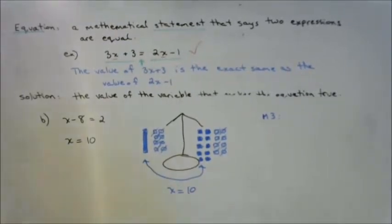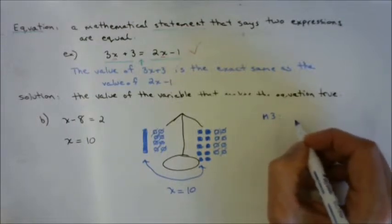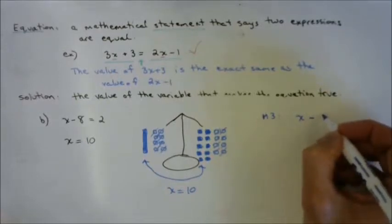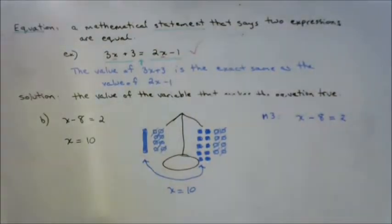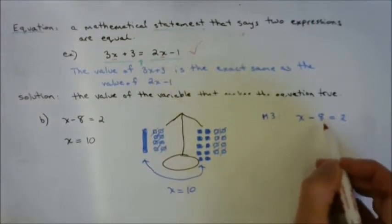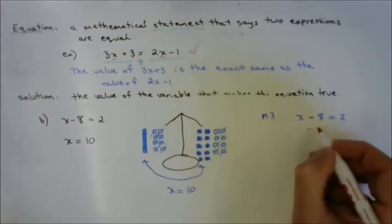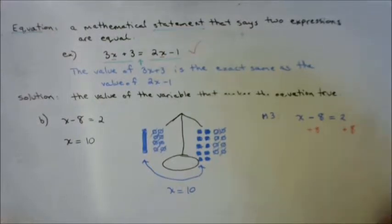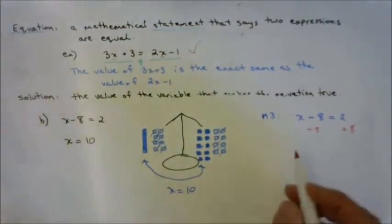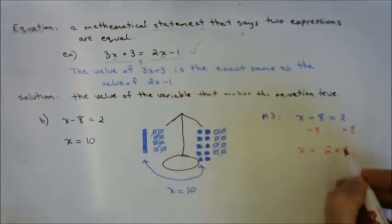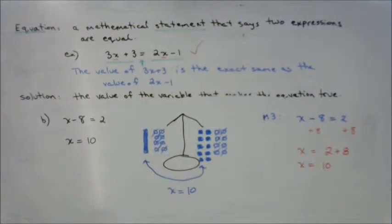Now let's skip to Method 3 — opposite operations — for x minus 8 equals 2. x has 8 being subtracted from it, so the opposite operation is adding 8. I add 8 to the left and 8 to the right, otherwise I'd be tipping my scale. On the left: x minus 8 plus 8 is just x. On the right: 2 plus 8 is 10. x equals 10.